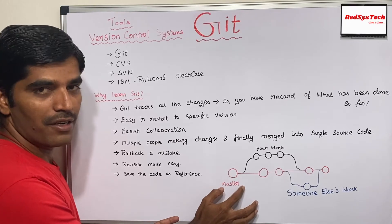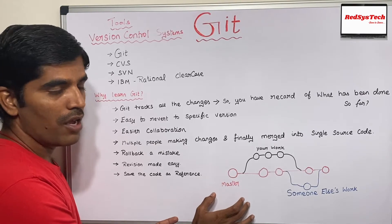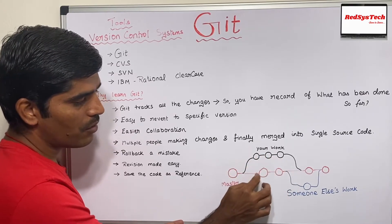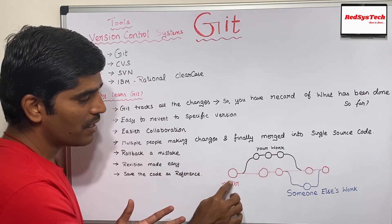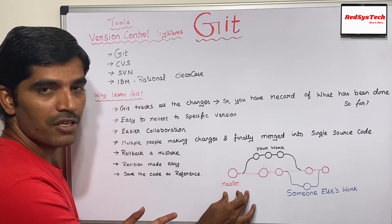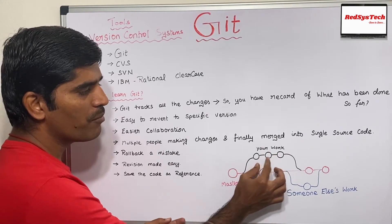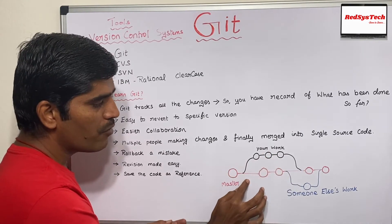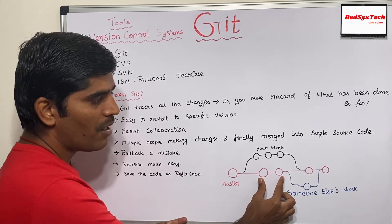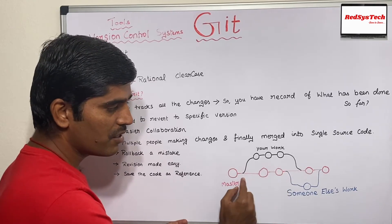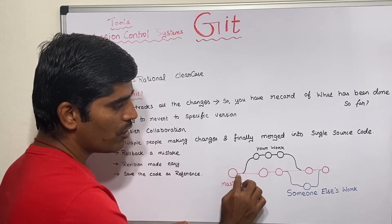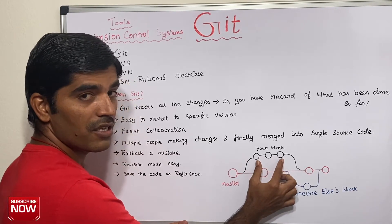Let me give you a simple example. Say you have some code here — this box is the code. You take a copy of it and work on it. All these rounds represent changes. There is the best version of the application, which we call the master branch. From here you take a copy and make three changes. Meanwhile, another team member has made two changes, and another person takes the code with those three changes and pushes their own change.